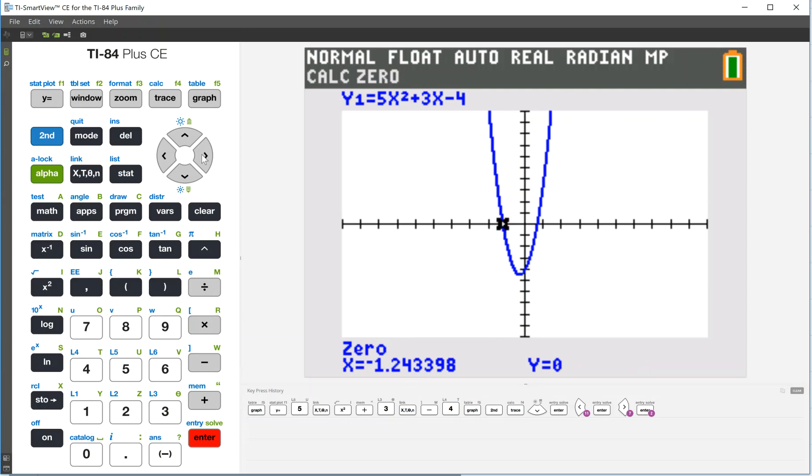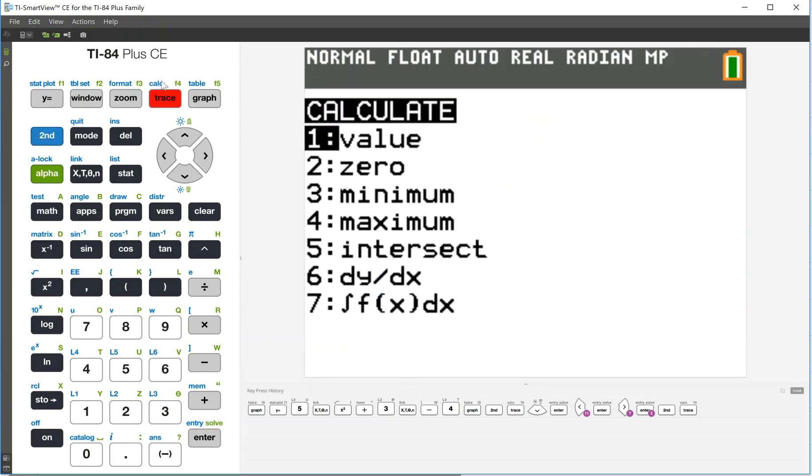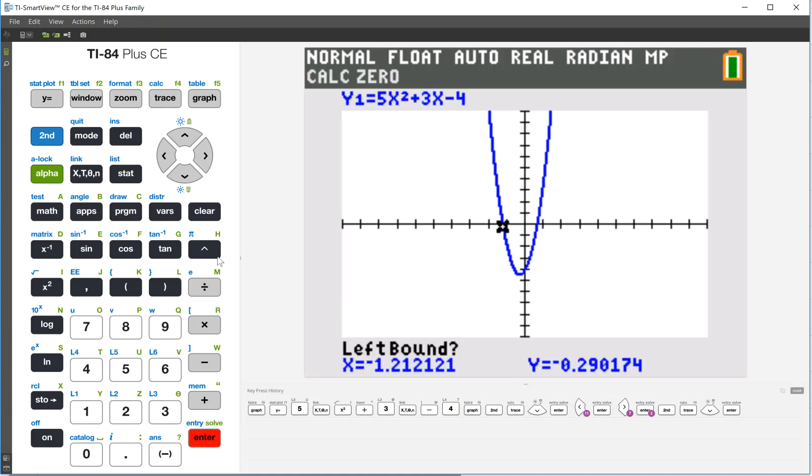Now let's find the other one. So again, we're going to do second and then calc or the trace button, and then we do option number two, which is zero. We found the left one, now let's find the right one. So it says give me a left bound, so let's get over to the left side. Hit enter.